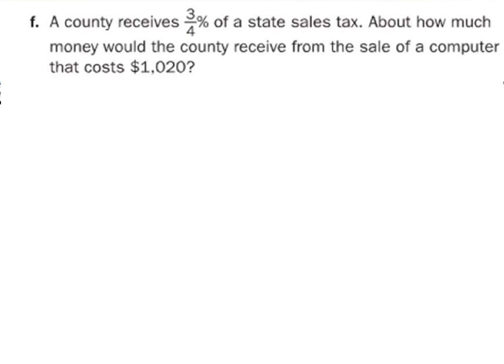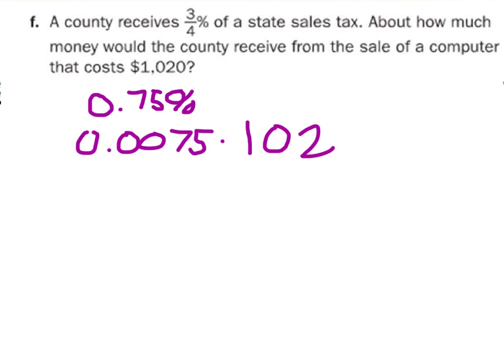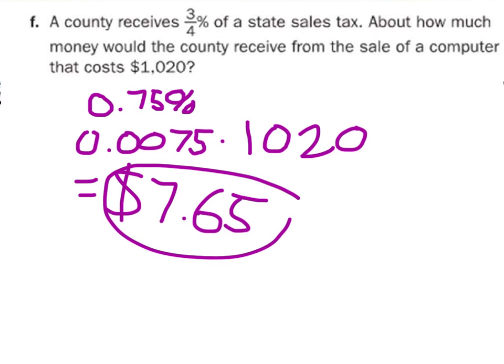So for the percentage, it would be 0.75%, but then you change that to 0.0075, and then you multiply that by that, and then you get $7.65. Bam. $7.65.